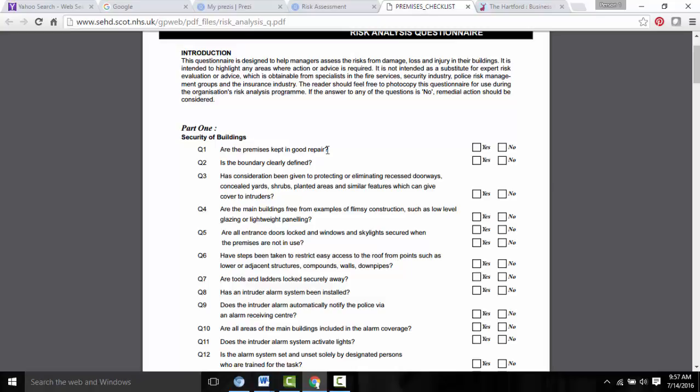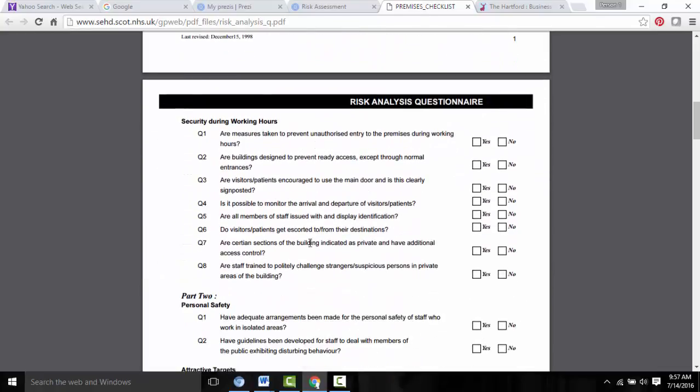These, as you can see, are yes or no questions. But by answering these questions, they could lead the business owner or risk manager to think about many other loss exposures. For example, are the premises kept in good repair? You might say no. How might you do a better job maintaining the premises? Another question: are all entrance doors locked and windows and skylights secured when the premises are not in use? If the answer is no, this might lead the risk manager to determine a procedure for ensuring that doors and windows and skylights are locked.